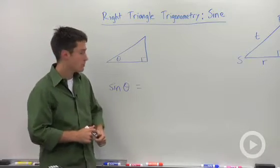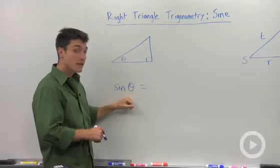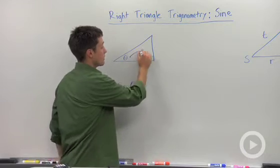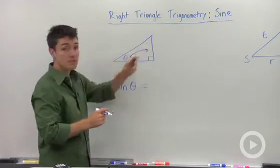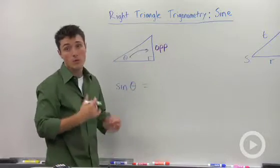So the tricky part about trigonometry is that theta could be either one of these angles. It will depend on which one you choose as how you define sine. So here, we're going to call the side that is opposite of theta the opposite side, which I'm going to abbreviate with OPP.